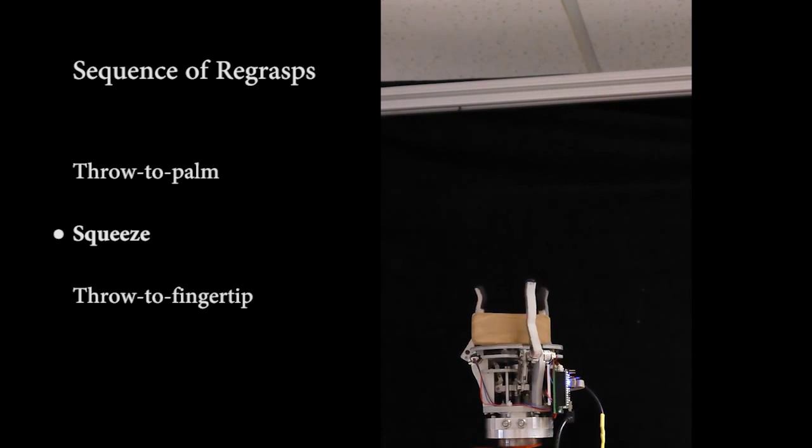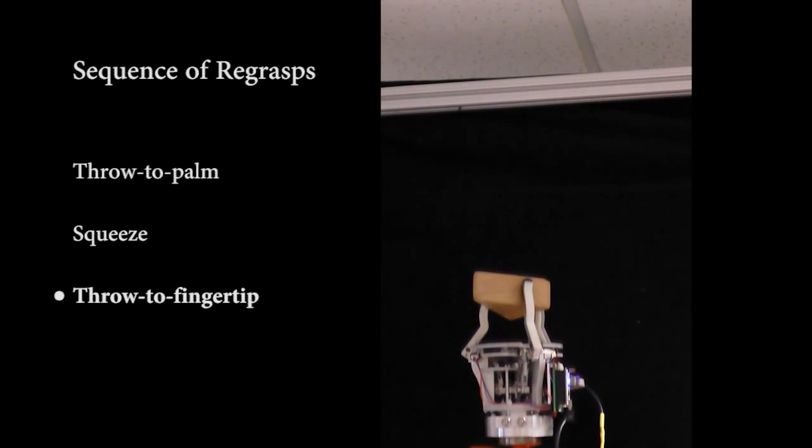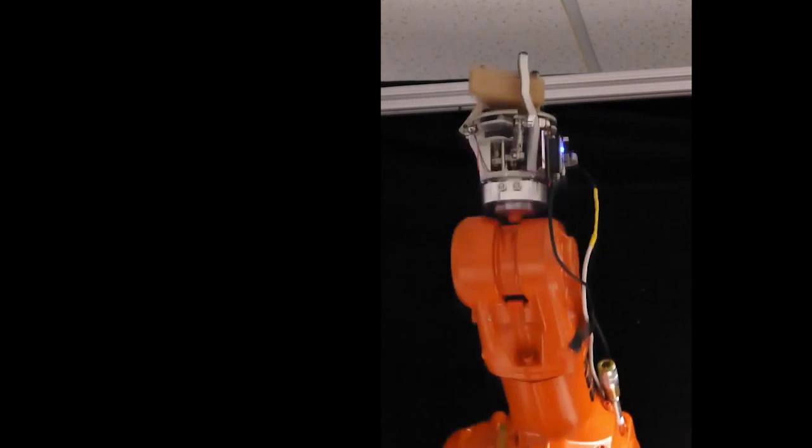In the future, we hope to model these regrasps and use those models to plan new sequences of regrasps. This will give robots the capability of arbitrarily changing the pose of the object in their hand.